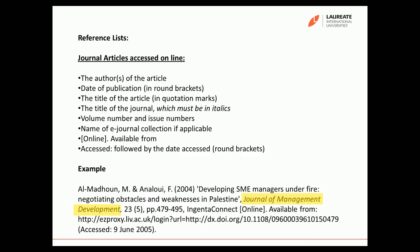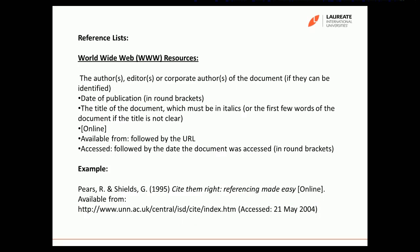The final example is how to reference a resource from the World Wide Web. Again, you always start with the author's name, then the year or date of publication, then the title in italics. Sometimes on a website the title of a passage may not be clear, so you can use the first few words or sentence of the document as the title. Then indicate it was 'online, available from' followed by the URL and the date you accessed it — in this case 'accessed 21st of May 2004' — always in close brackets. As you can see, all references follow a similar structure but need different information depending on the resource.